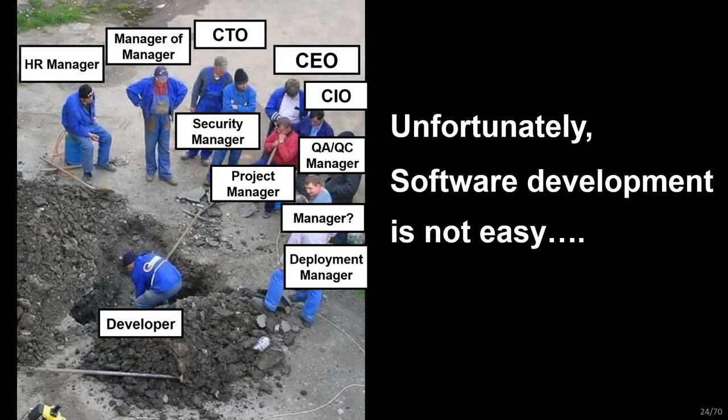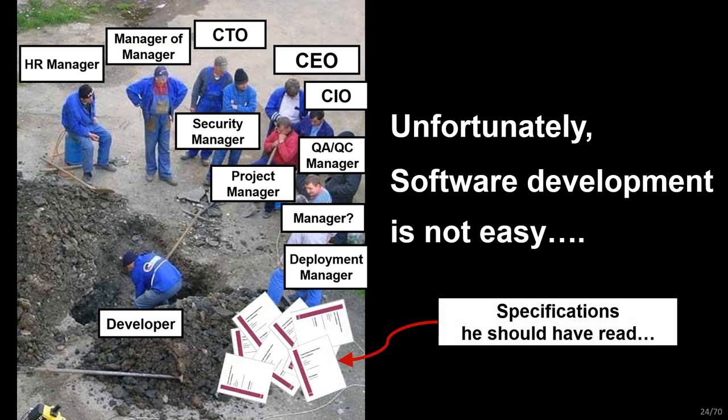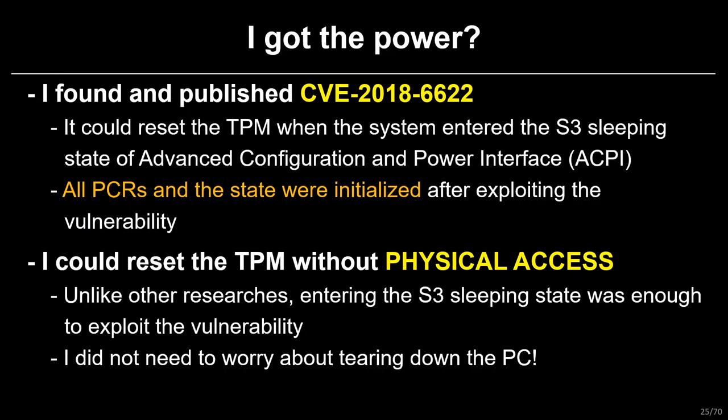Unfortunately, software development is not easy these days because there are so many people who support the developer — project manager, security manager, manager of manager, even CTO and CEO heartily support the developer. Due to it, the developer has no time to read the specification carefully. Because of this environment, I could find and publish CVE-2018-6622. It could reset the TPM when the system entered the S3 sleeping state of the Advanced Configuration and Power Interface, or ACPI. After exploiting the vulnerability, all PCRs and states were initialized. Due to the vulnerability, I could reset the TPM without physical access. Unlike other researchers, entering the S3 sleeping state was enough to exploit the vulnerability, meaning I did not need to worry about tearing down the PC.